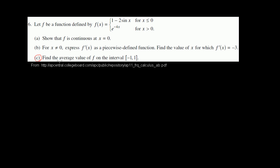Part c: find the average value of f on the interval negative 1 to 1. The average value of a function over an interval is the integral over the interval, from negative 1 to 1, of f(x) dx, divided by our change in x.